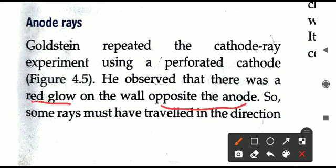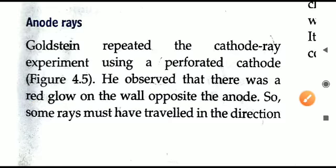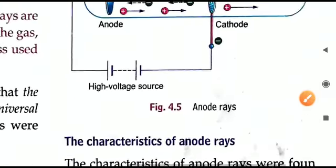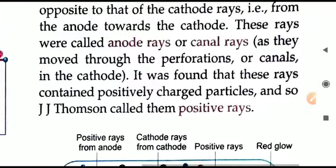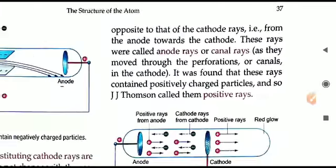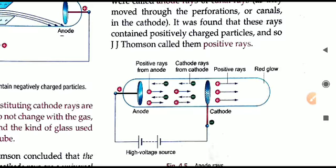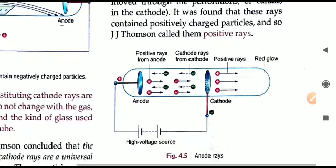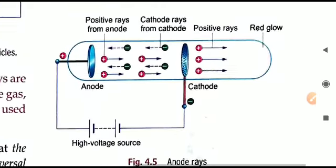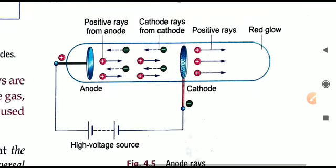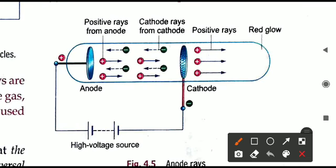When Goldstein used the perforated cathode, he observed that there was a red colored glow on the wall opposite the anode. That means some rays had traveled in the opposite direction. Let us look at the diagram to understand better — something is passing in a backward manner as well.